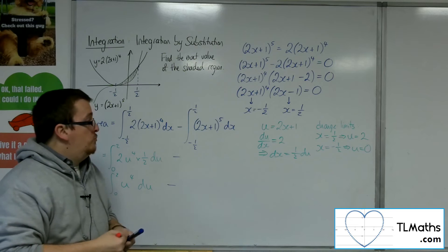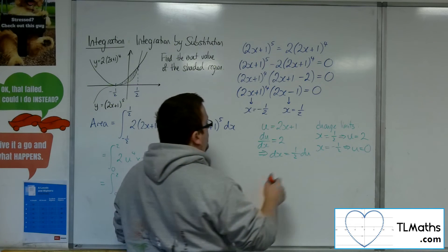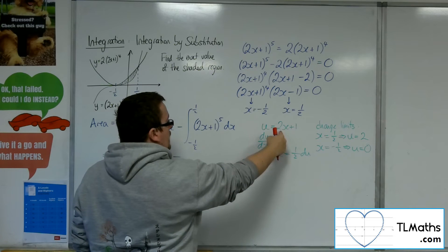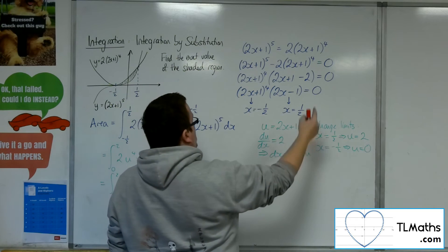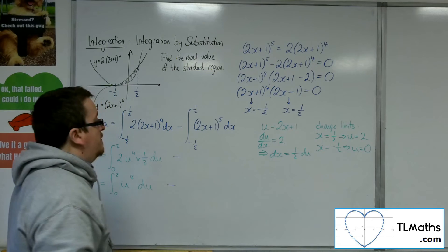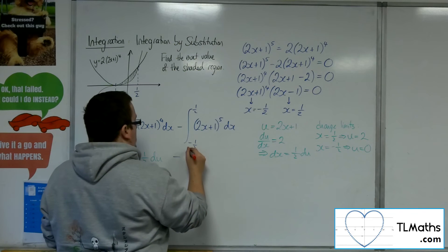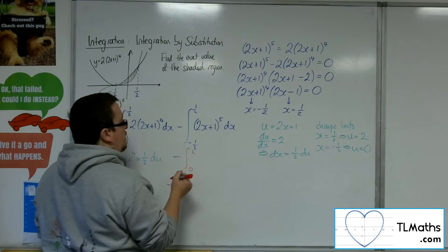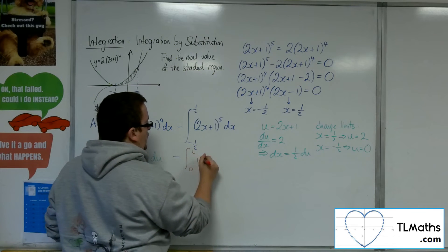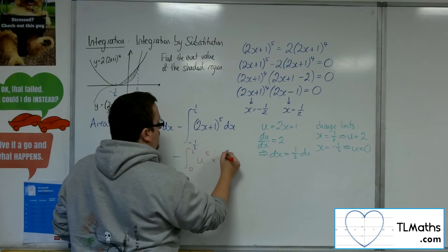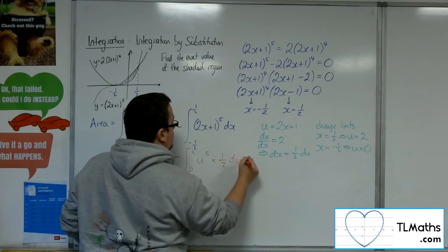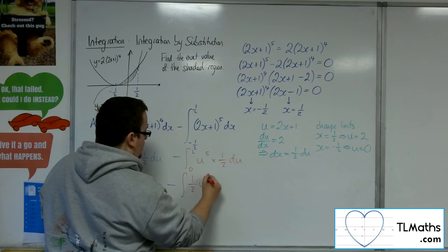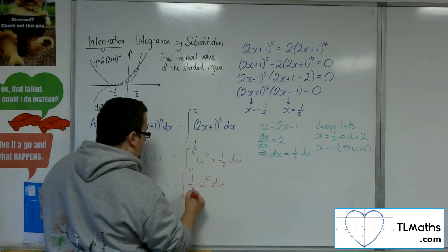Now, as for the second integral. The u being 2x plus 1 would be the same. So all that would be the same. The limits would also change to the same values. So we'd actually have the integral here between 0 and 2 of 2x plus 1. So u to the 5 times 1 half du. So this is the integral of 1 half u to the 5 du evaluated between 0 and 2.